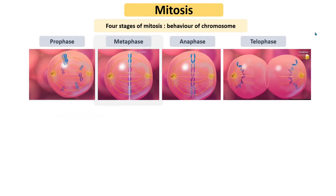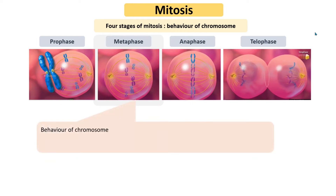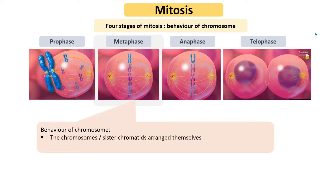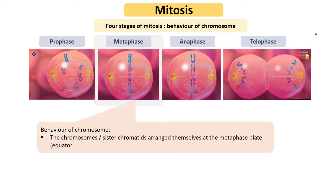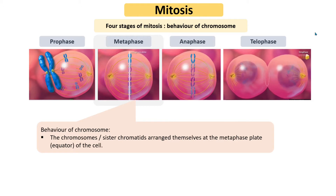In metaphase, the behavior of chromosomes is that the chromosomes, or sister chromatids, arrange themselves at the metaphase plate, or equator, of the cell.